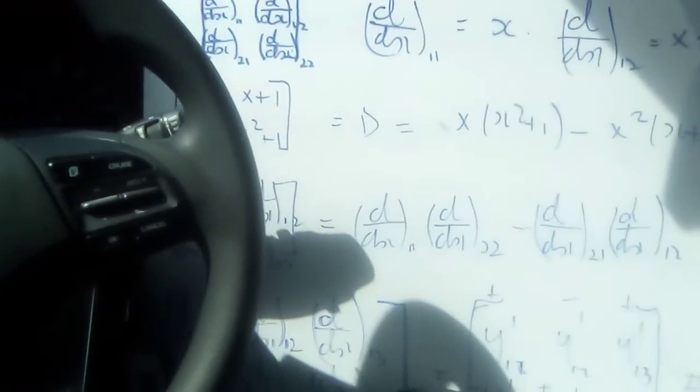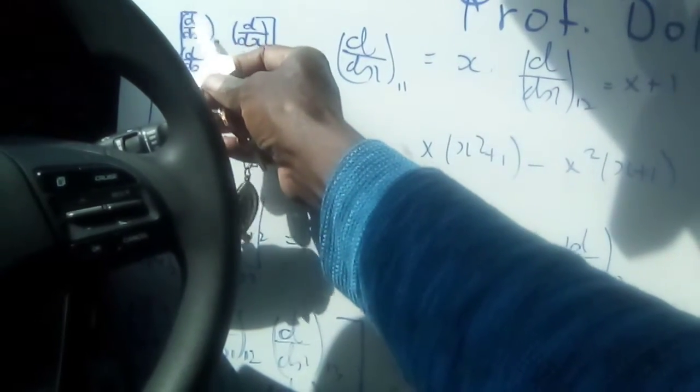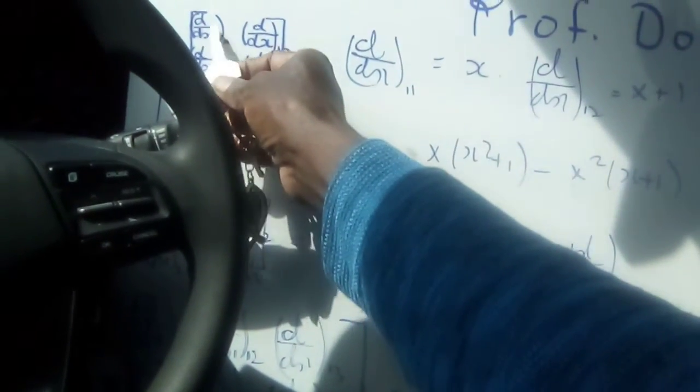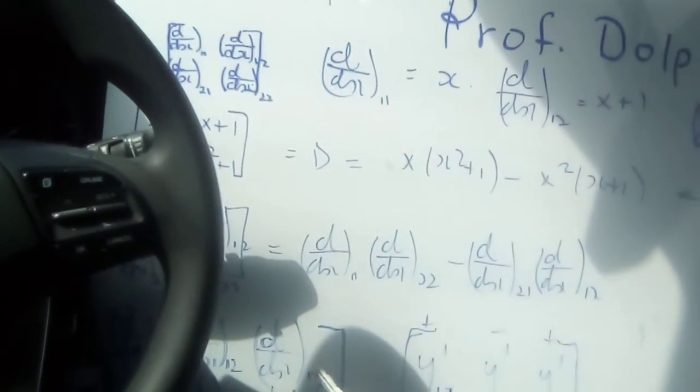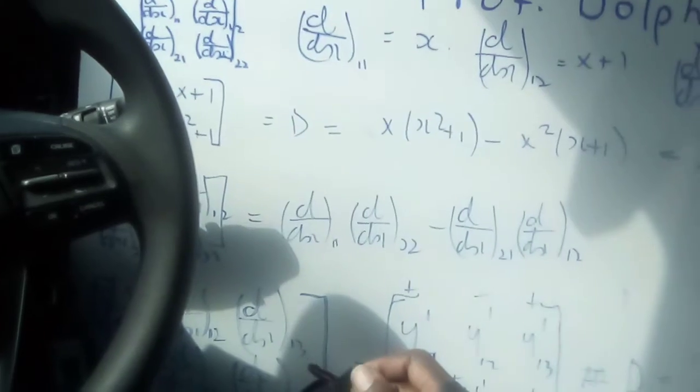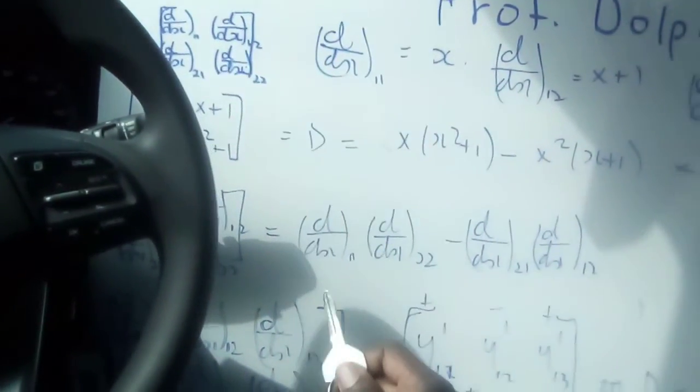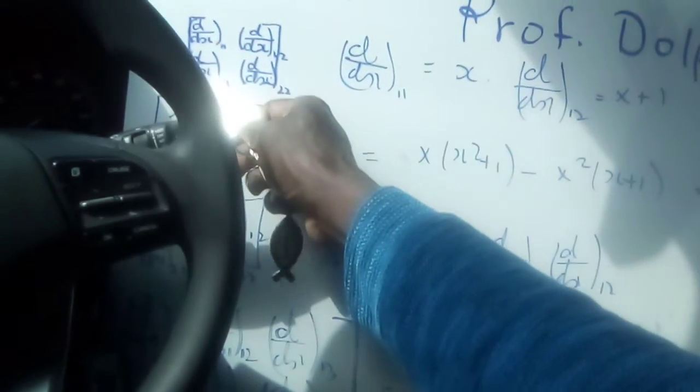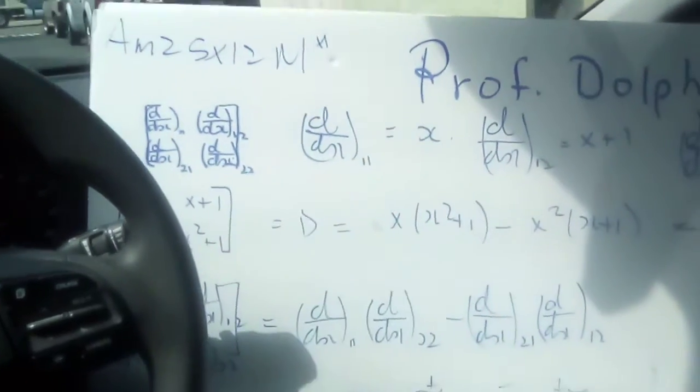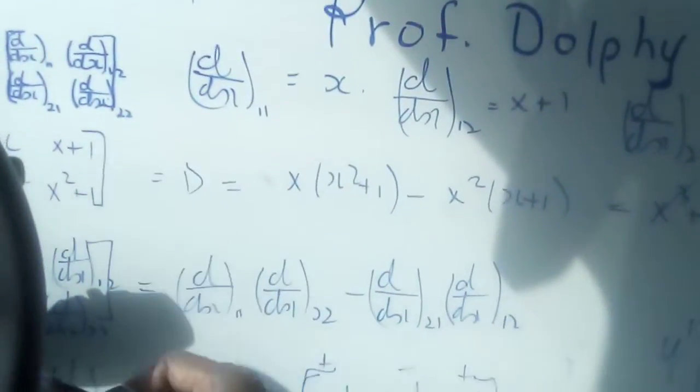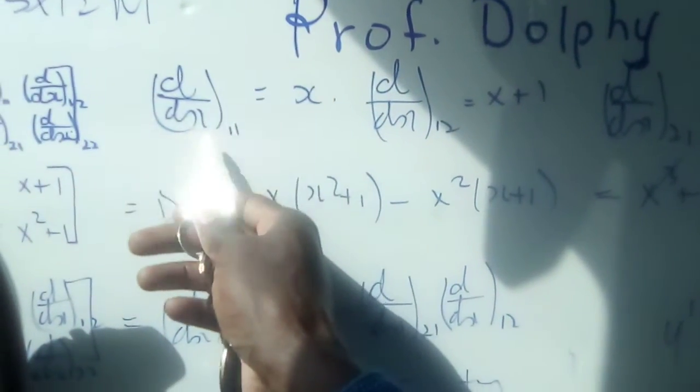That is to say, whatever the value of r11, we're going to find d by dx. Whatever the value of r12, we're going to find d by dx. For r21, we're going to find d by dx, and whatever the value of r22, we're going to find d by dx.